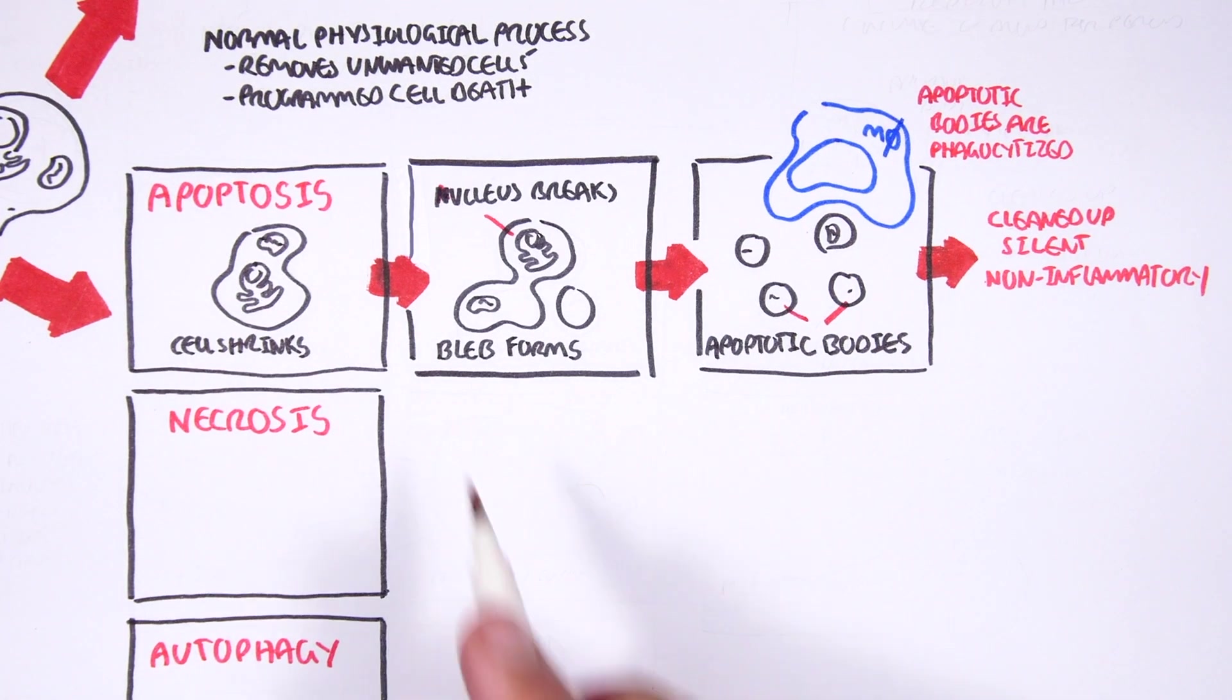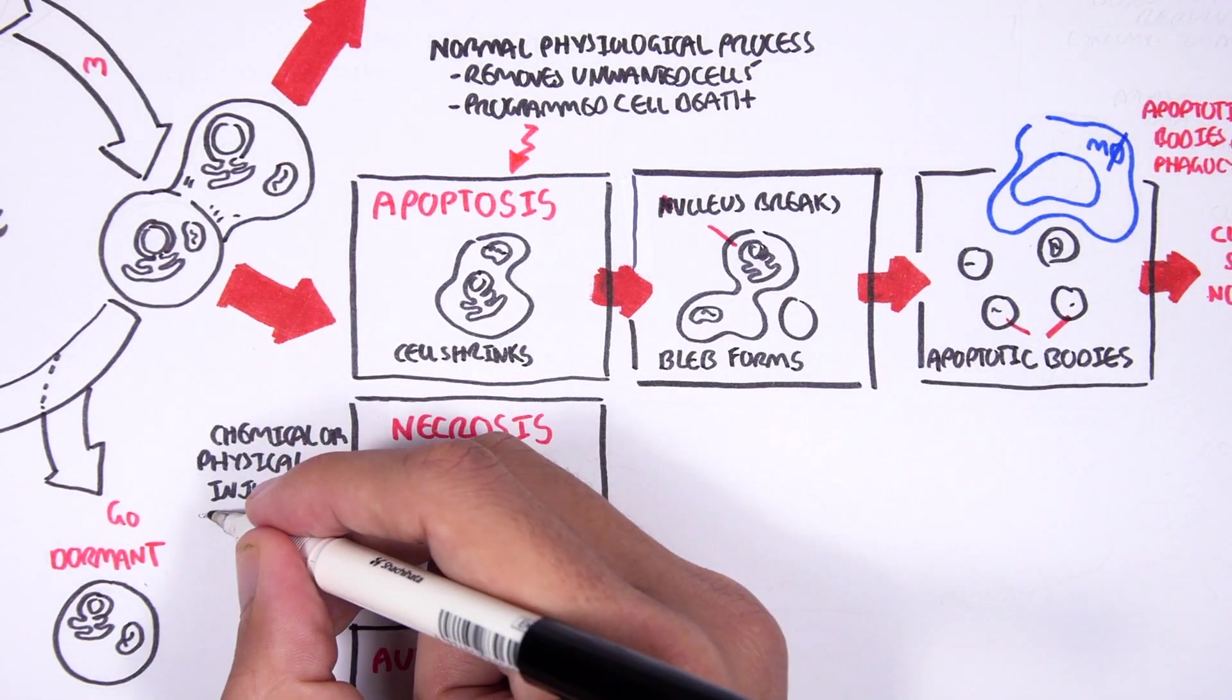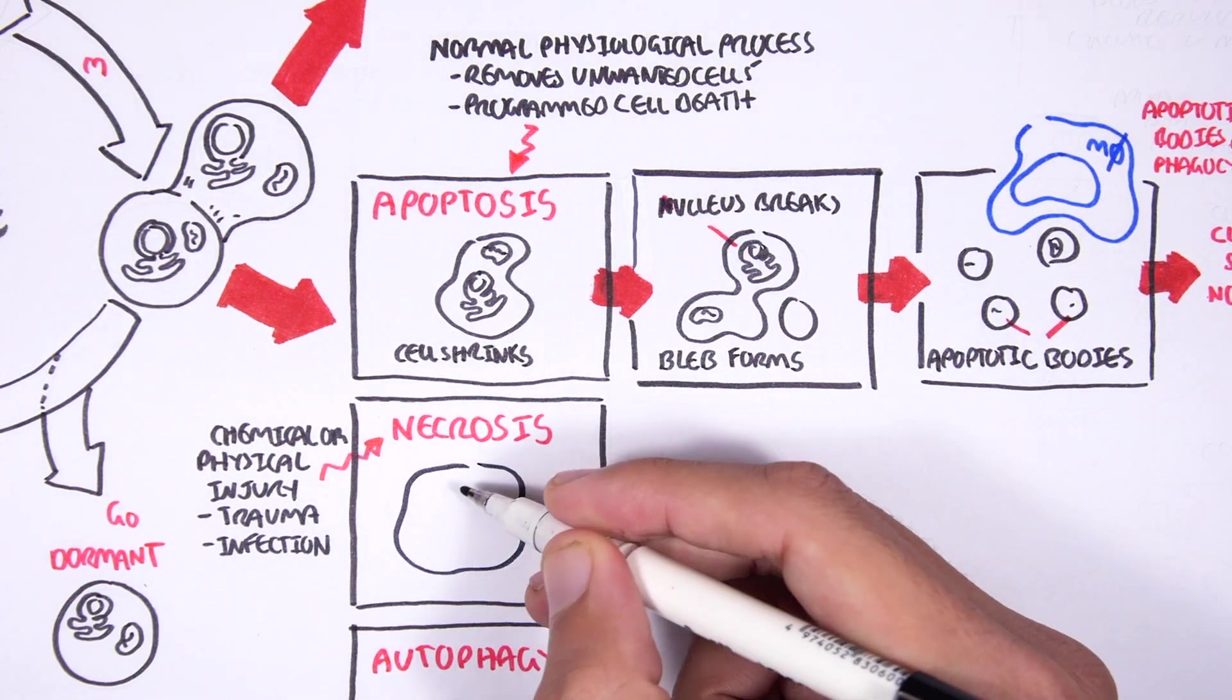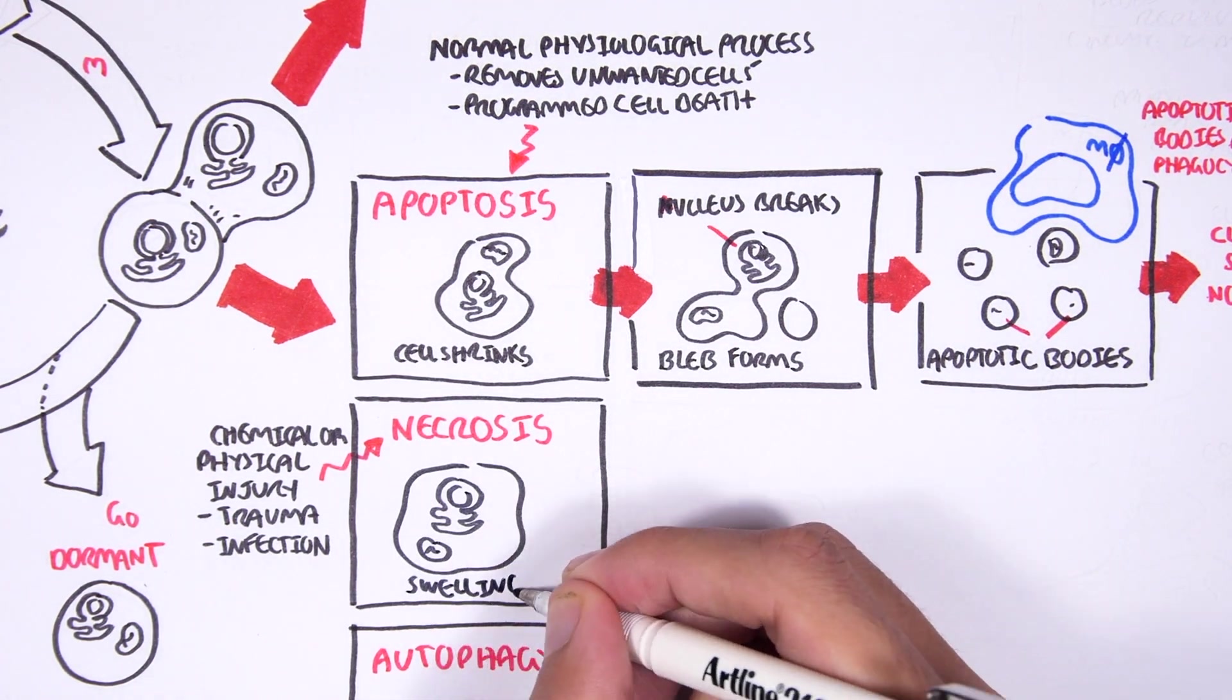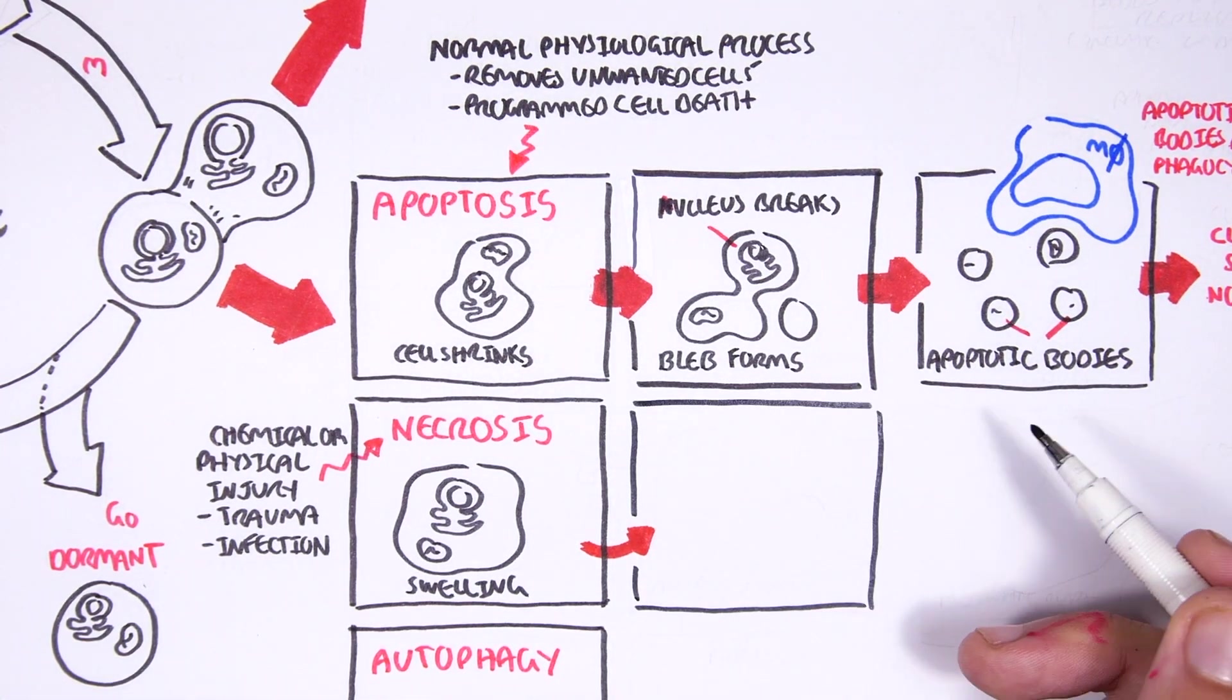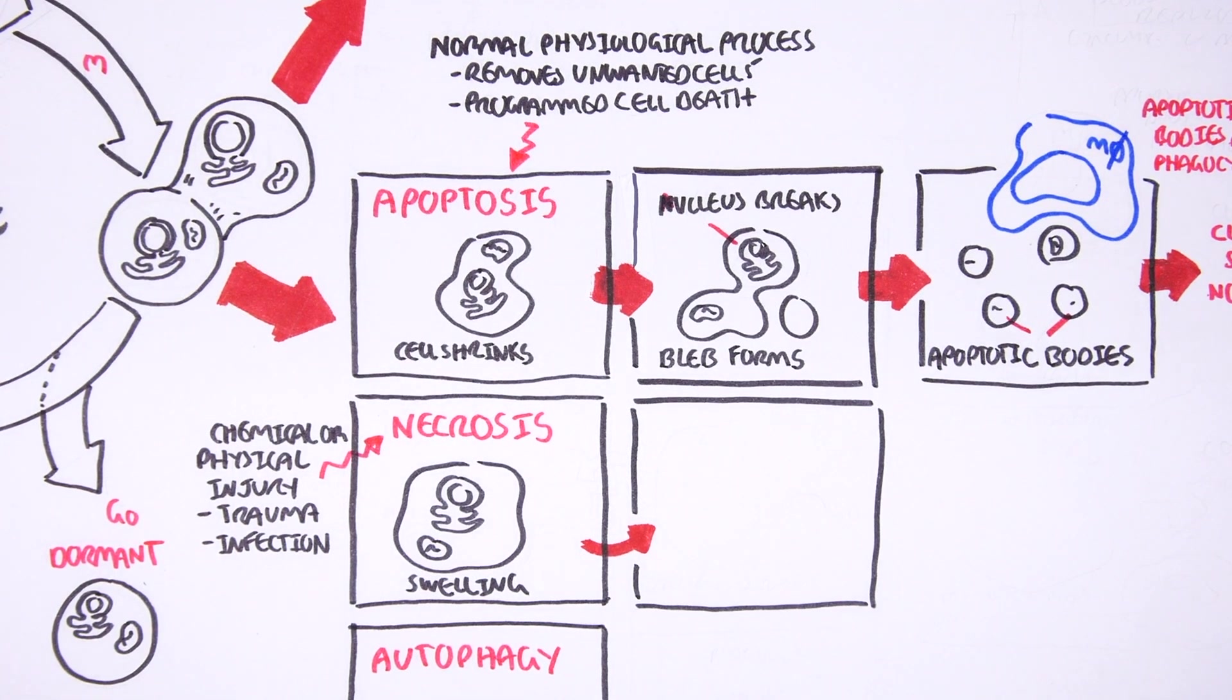Necrosis, on the other hand, is completely different. The cell may be chemically or physically damaged by some form of trauma or infection. A normal cell, if it was in normal conditions, it will undergo apoptosis. But if a cell just died, it will undergo necrosis and so it will die by non-programmed means.